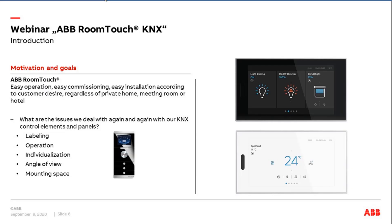So let's start with the introduction. The ABB Room Touch is a new small touch panel, especially designed to control a room — it's a room control device. The panel will be available in black and in white. The main targets were to have an easy operation, an easy way of commissioning, and to cover a wide range of applications. The panel is also the successor of the old prion display, which phased out this year, with many improvements in labeling, operation, individualization, angle of view, and mounting space.